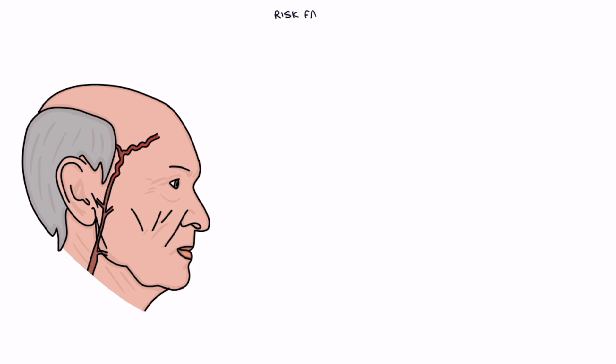Let's go through the risk factors. The risk factors for giant cell arteritis are being older — it typically occurs in patients over 50 years of age — white ethnicity, and being female.